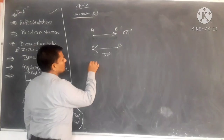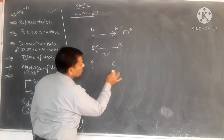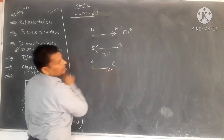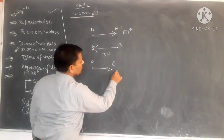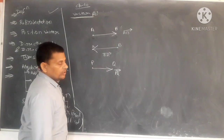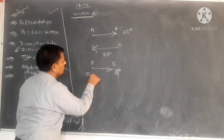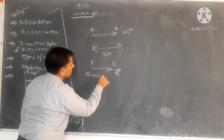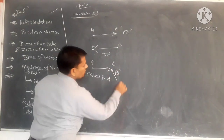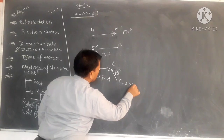For example, if this is point P and this is point Q, and we join from point P to Q, then the direction is from P to Q, and you write PQ with an arrow. Now there are some names: the starting point is called the initial point, and the last point is called the final point or terminal point.